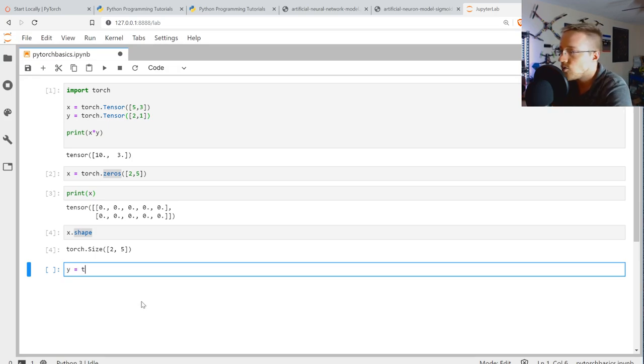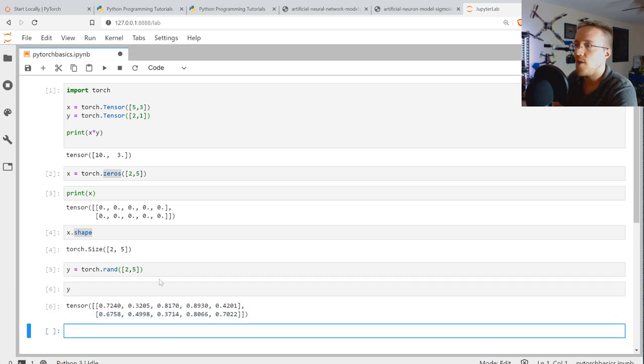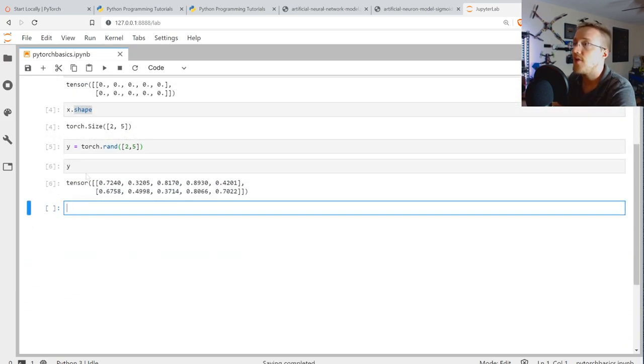So again, we could say Y equals torch.rand, and then we could say 2, 5, and then we can output Y. And there you have just a random initialization of a 2 by 5 tensor.